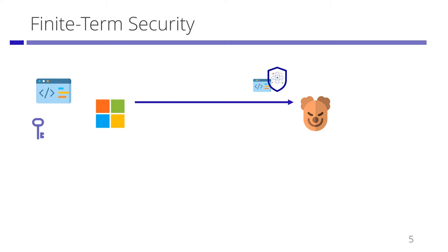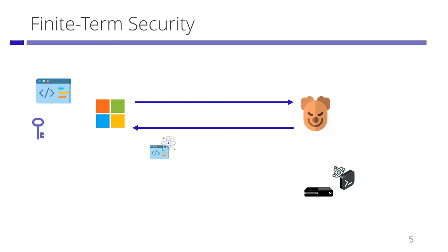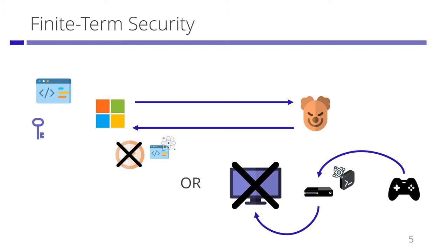There are two security notions for Secure Software Leasing. One is finite-term security. In this security game, an adversary receives a protected software and tries to generate possibly entangled bipartite states. Both of them can be used to run the leasing software. The adversary sends one state to the lessor as a returned software and uses the other one to run the leased software. Finite-term security guarantees the returned software is not valid, or the adversary cannot run the leased software on the legitimate platform anymore.